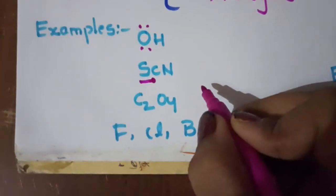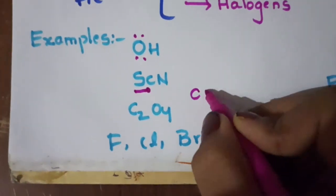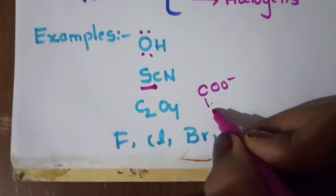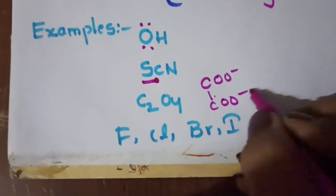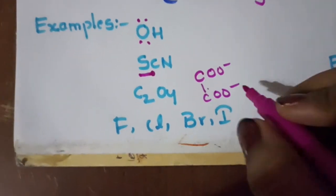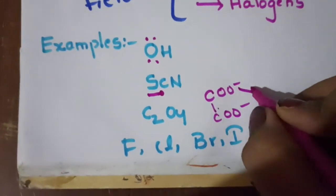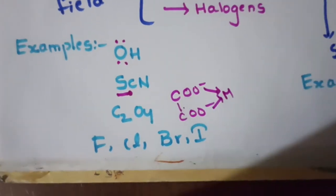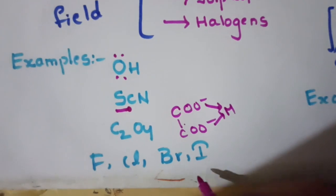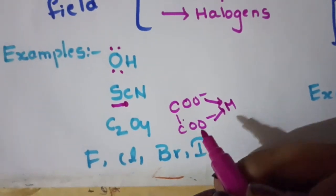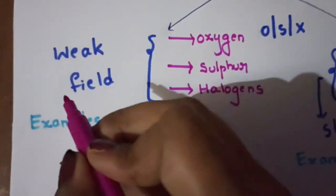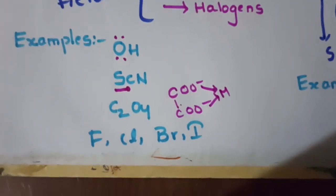Here is the oxalate ion structure. The donor atom is Oxygen, which donates electrons. So this is a weak field ion.